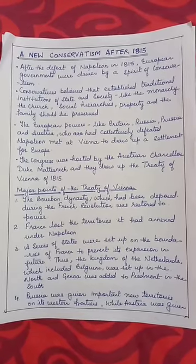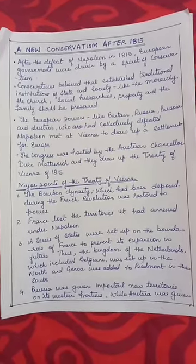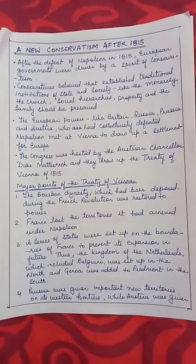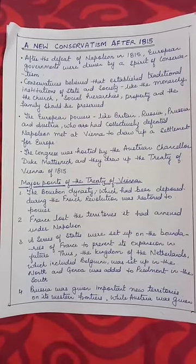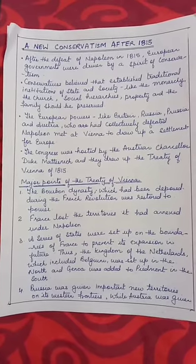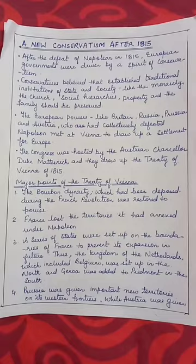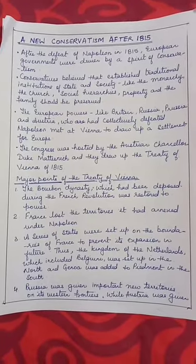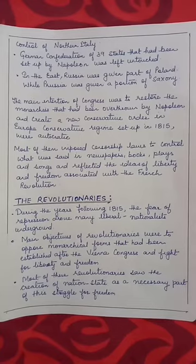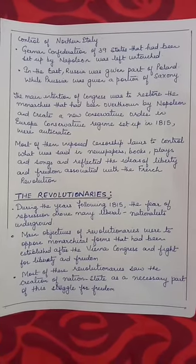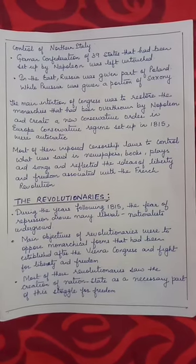The major points of the Treaty of Vienna were: first, the Bourbon dynasty, which had been deposed during the French Revolution, was restored to power; France lost the territories it had annexed under Napoleon. A series of states were set up on the boundaries of France to prevent its expansion — the Kingdom of Netherlands (including Belgium) in the north, Genoa was added to Piedmont in the south, Prussia was given important new territories on its western frontiers, and Austria was given control of northern Italy. The German Confederation of 39 states set up by Napoleon was left untouched. In the east, Russia was given part of Poland, while Prussia was given a portion of Saxony.